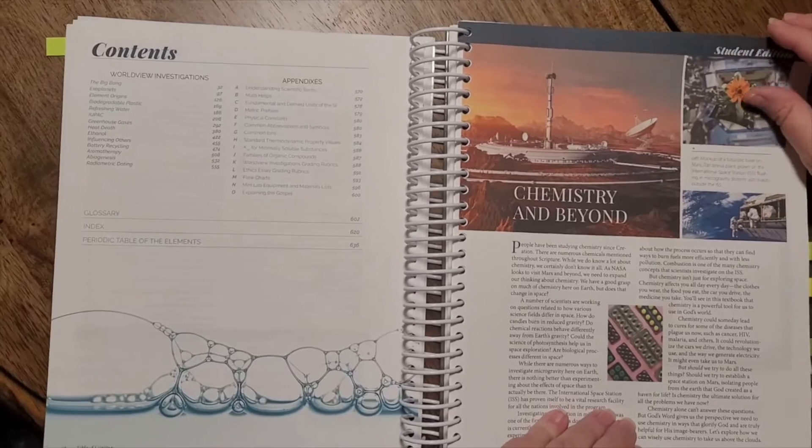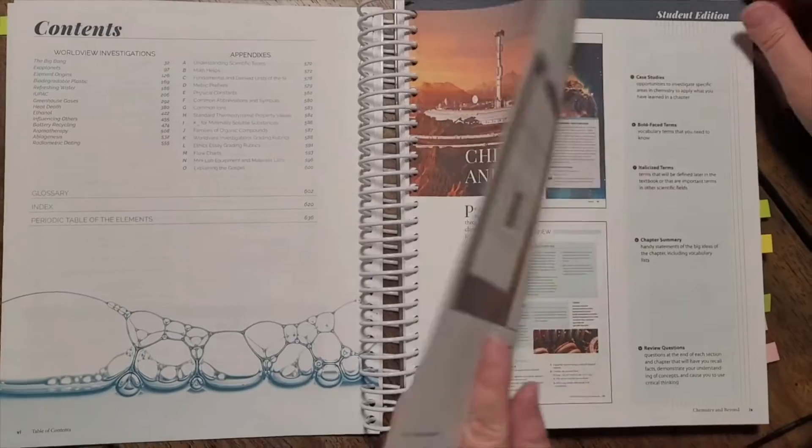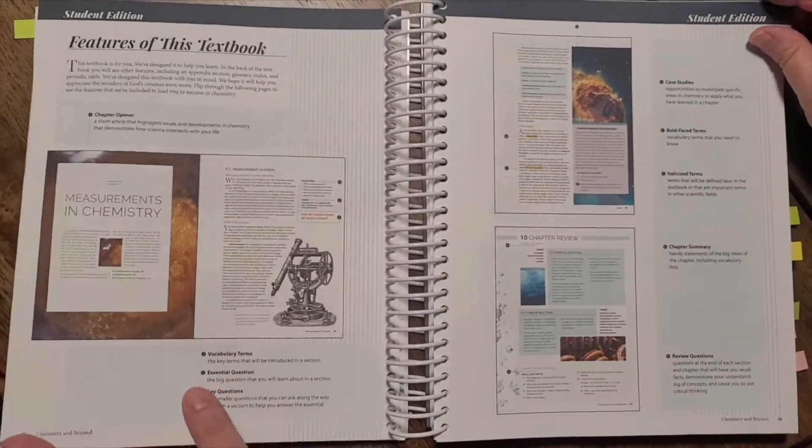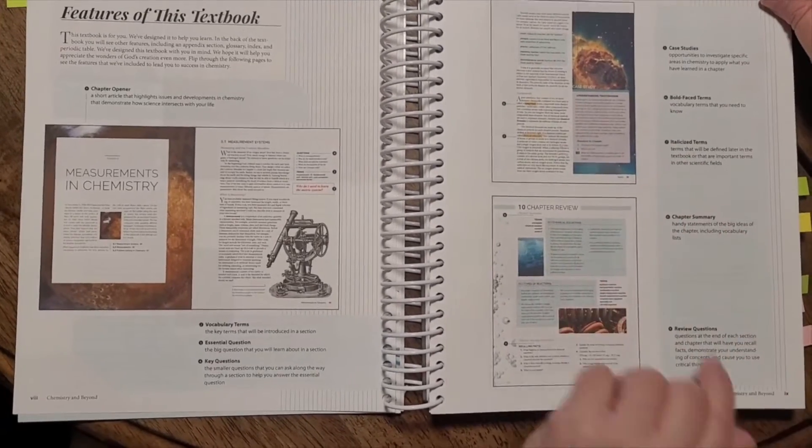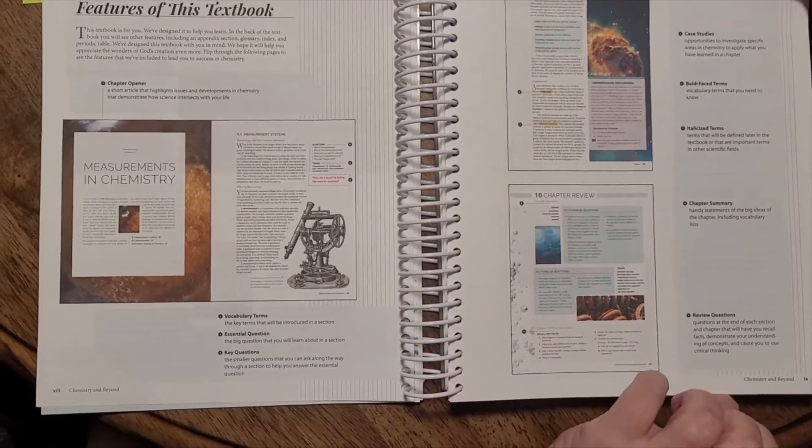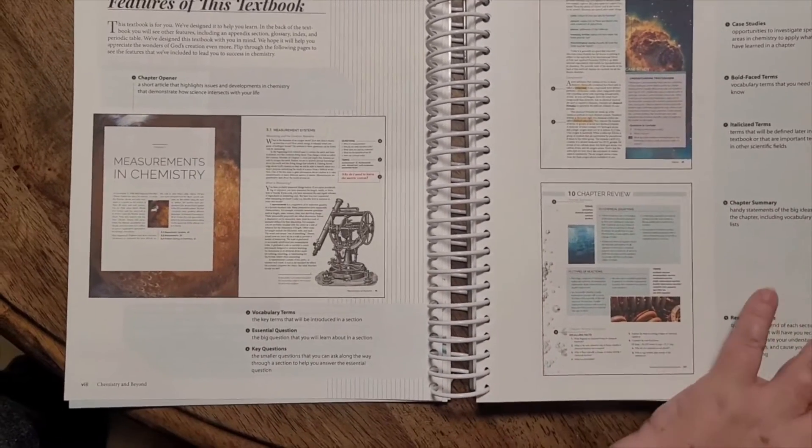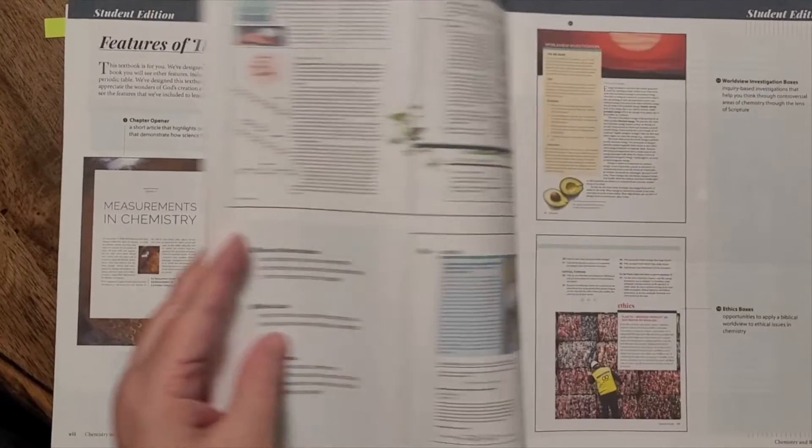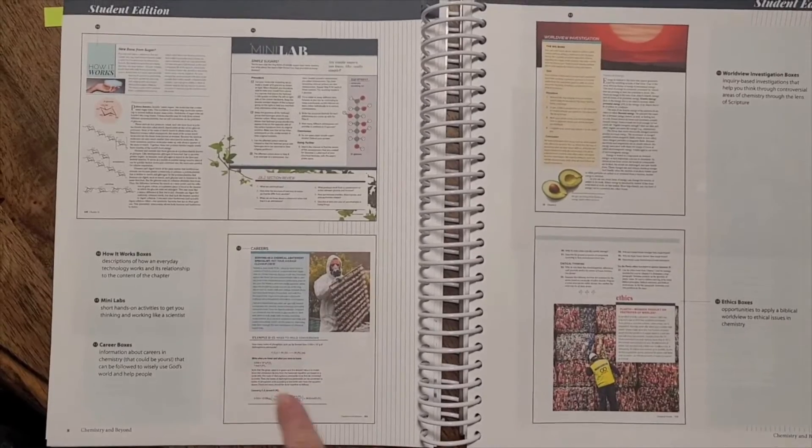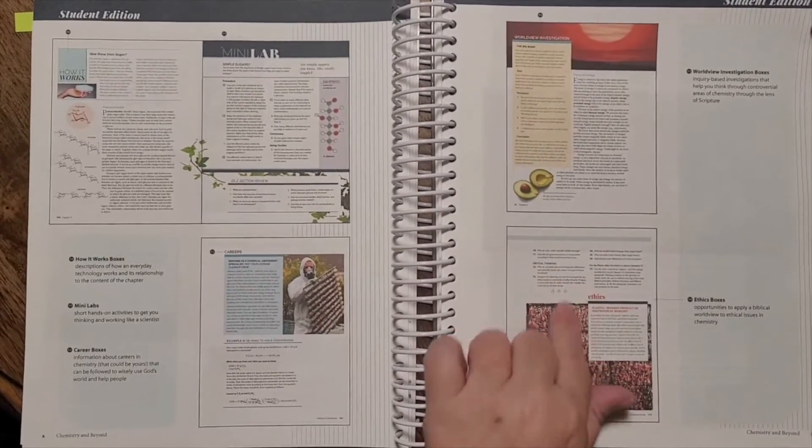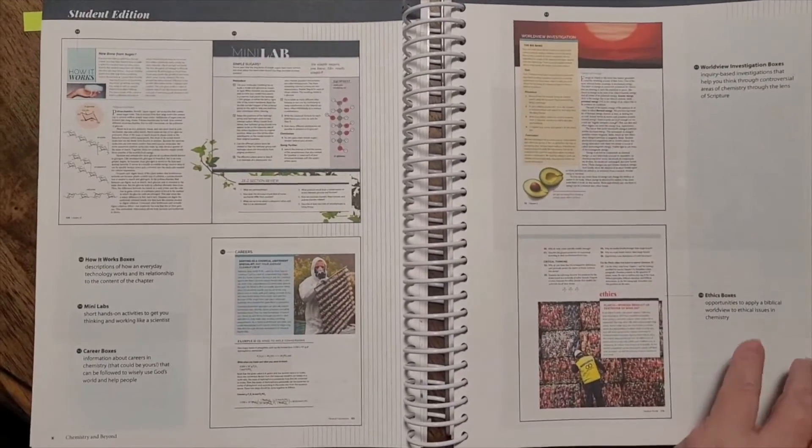You have here a view of what's inside the student edition. I'm not going to linger here because we'll look at the student edition. But it tells you the different features, lets you know different things that you might want to focus on, review questions, vocabulary terms, those sorts of things. And then it also shows you the mini lab, how it works. Here's the ethics at the end of the section and then the worldview investigations.